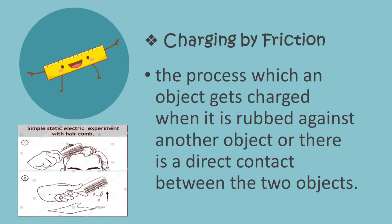When two objects are rubbed together, one object loses electron while the other gains electron. The object that gains electrons has a negative charge while the object that loses electron has a positive charge.